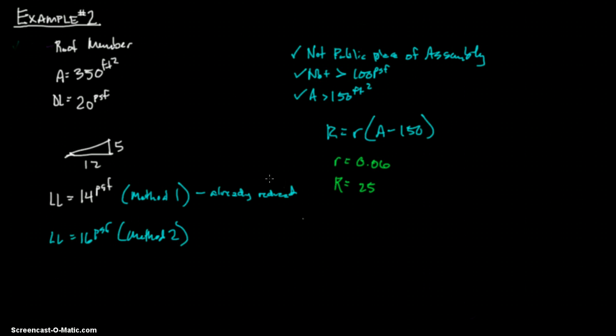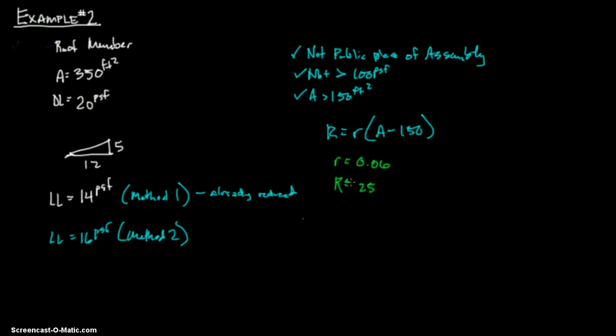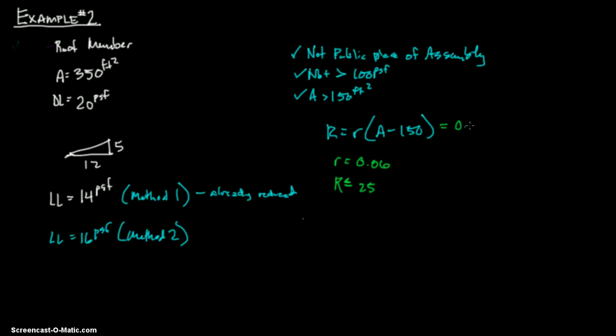And then we go ahead and plug and chug. Actually that's maximum, so it's not greater than this. Less than or equal to 25. Let's just say that. It's because it says it's the maximum reduction ratio percentage. So let's go in there and go ahead and solve. So we have 0.06, A is 350, minus 150.